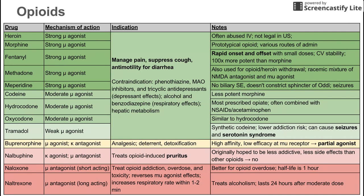Next is nalbuphine, which is a kappa agonist and a mu antagonist. It's used to treat opioid-induced pruritus — an itchy rash caused by many opioids. This drug was originally designed in attempts to make an opioid that's less addictive with fewer side effects. While that didn't work out, they did find that nalbuphine effectively reduces the pruritus caused by other opioids.